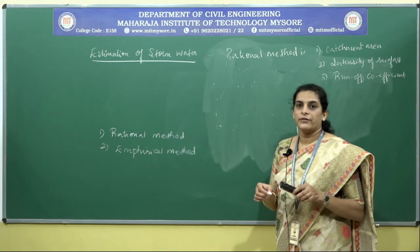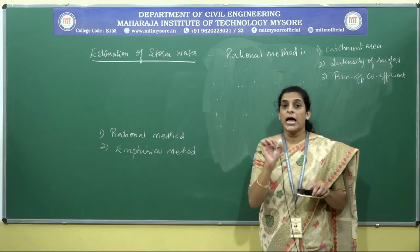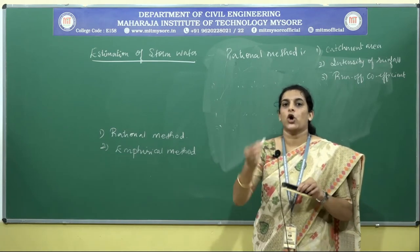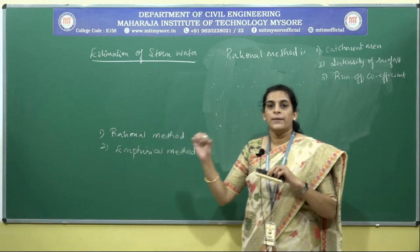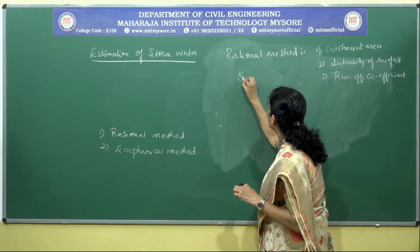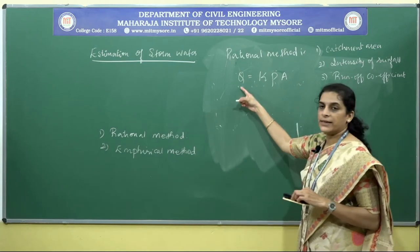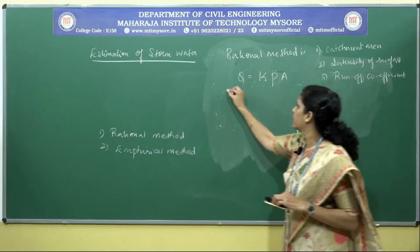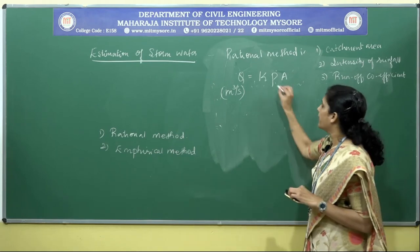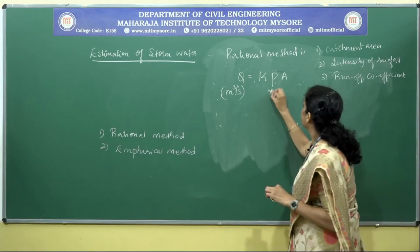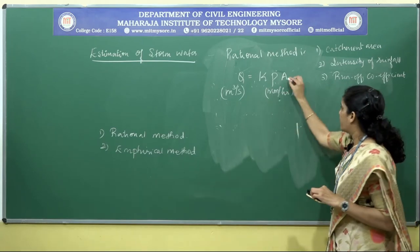The rational formula adopted to estimate the total quantity of storm water considers that portion of water which is not infiltrated below the ground but is flowing above the ground and reaching the sewer. The formula is Q = KPA, wherein Q represents the quantity of storm water in cubic meters per second, K is the coefficient of runoff, P is the intensity of rainfall in millimeters per hour, and A is the catchment area or drainage area.